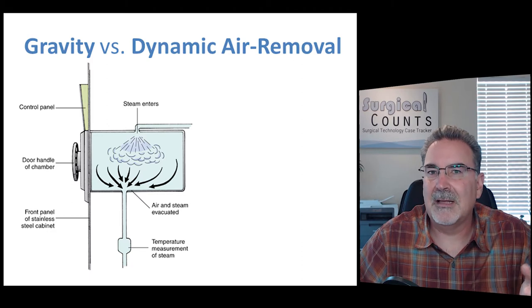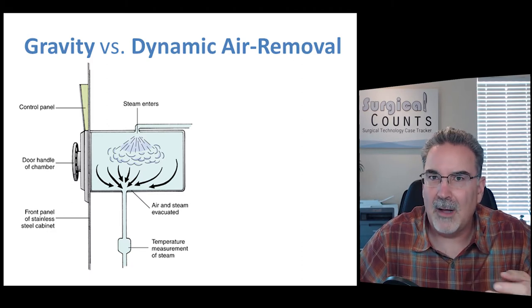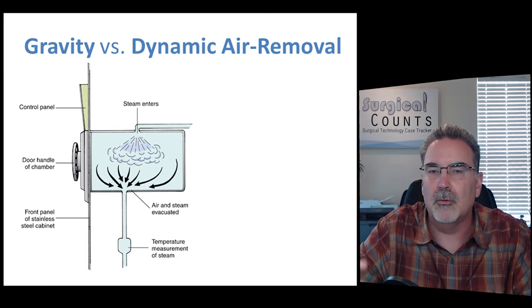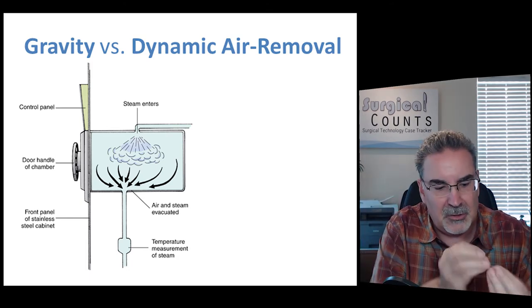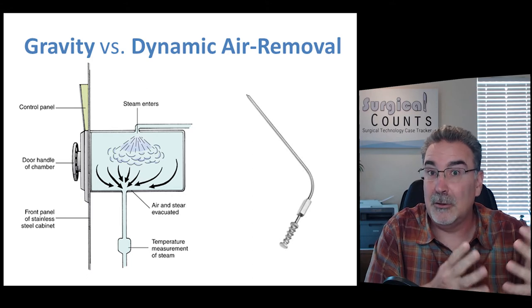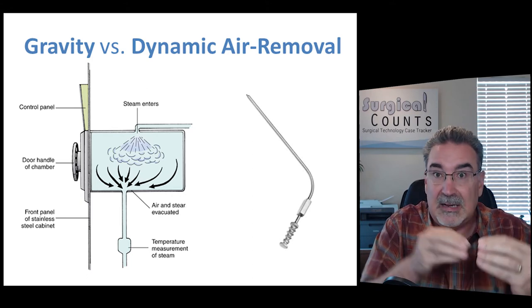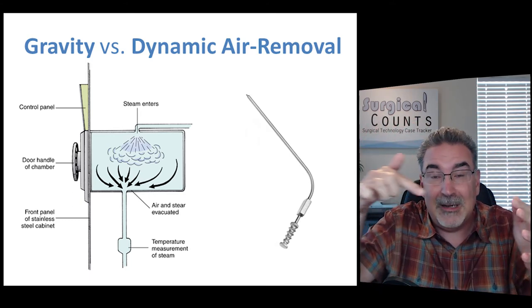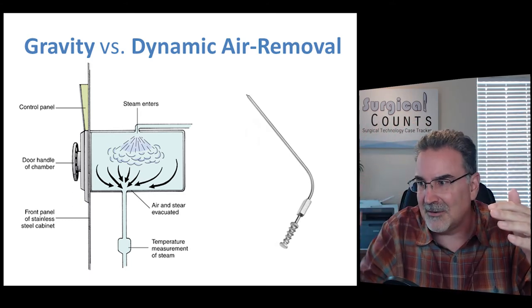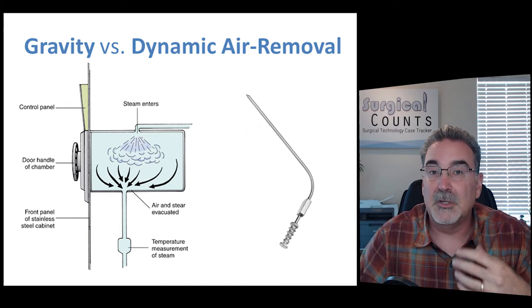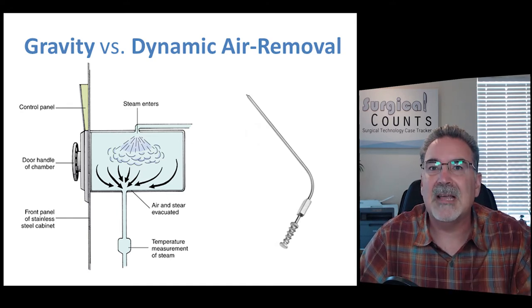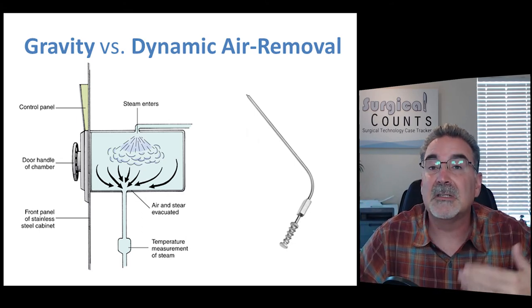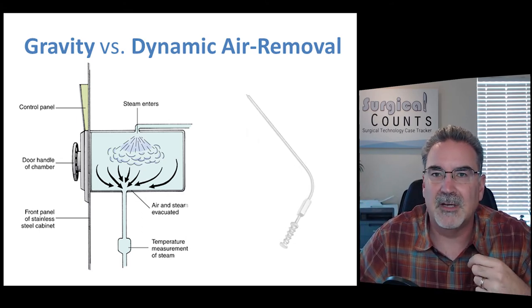The problem with a gravity system is it tends to take a while for the steam to permeate into and around and through all the instruments, all the little nooks and crannies, and especially into lumens. If you have an instrument with a lumen — say it's a tube — the steam is going to filter around it, but the air inside that lumen isn't necessarily going to drain out well. So when using a gravity system, it's going to take the steam a lot longer to make its way into all those little spaces, meaning you're going to sterilize them for a longer period of time.